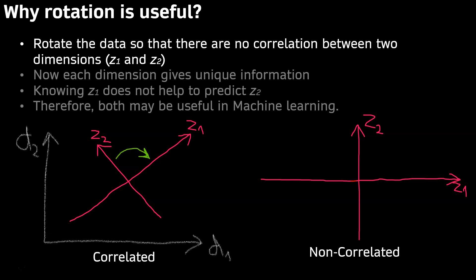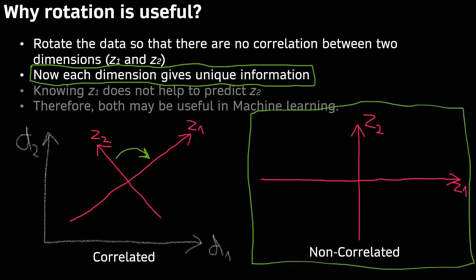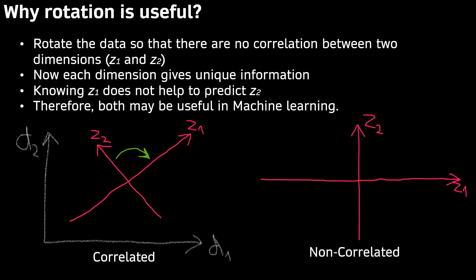Now, each dimension gives unique information. Knowing Z1 does not help me predict Z2, and therefore, both may be useful in a machine learning model.